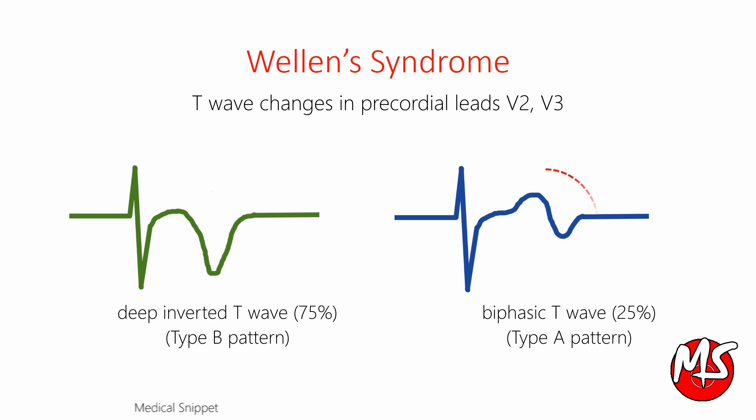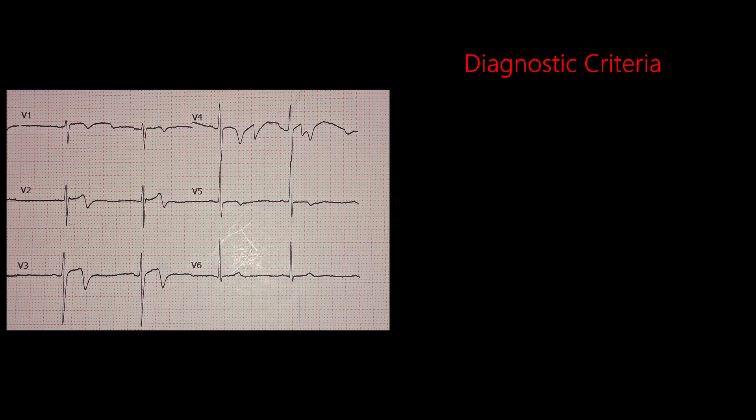The less common type is biphasic T wave, which is seen in 25% of cases. Let's discuss the diagnostic criteria of Wellens syndrome with an example.